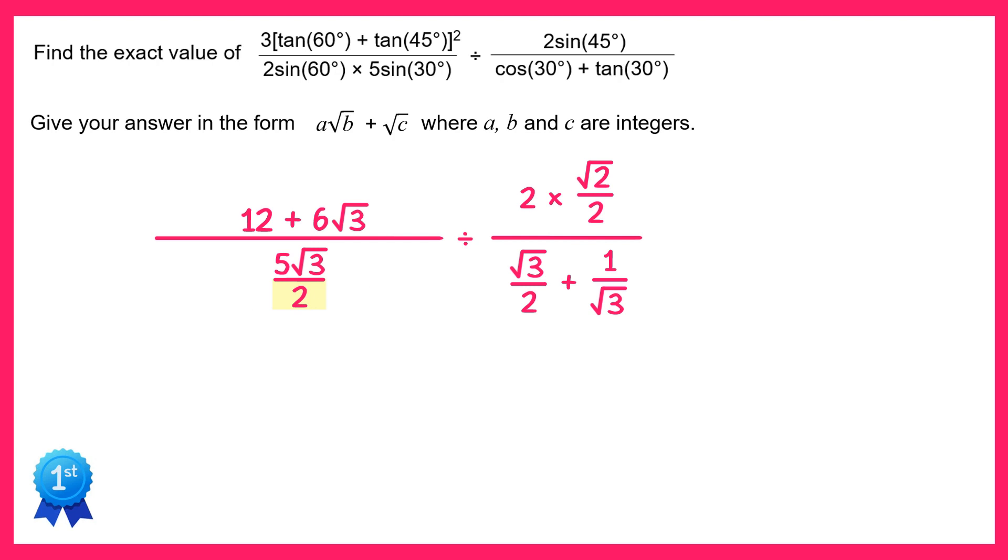We can deal with this 2 on the bottom here by timesing the top and the bottom of the large fraction by 2. If you times the bottom of the fraction by 2 it will cancel that 2, so we just need to double the top of the fraction. So instead of 12 plus 6 root 3, it's 24 plus 12 root 3.